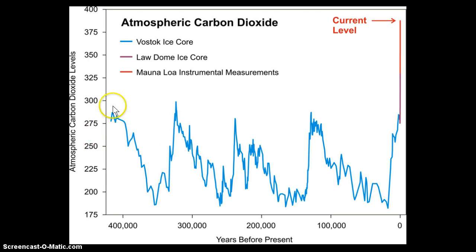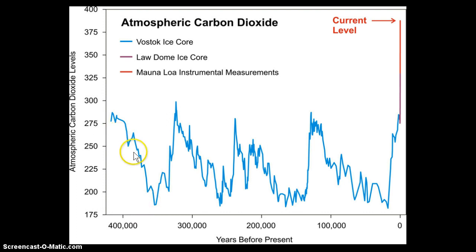Carbon dioxide over the last almost 500,000 years has had these natural fluctuations. The overall trend is somewhere between 290 parts per million CO2 and around 180 parts per million CO2. It's fluctuated up and down for at least 500,000 years, and we think for much longer. When carbon dioxide is high, it's a greenhouse gas which warms the planet. When it's very low, it's not warming the planet as much and we have an ice age.